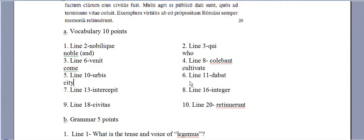Urbis is city. Dabot is give. Interkepet is intercept or cut off. Integer is whole or fresh. Kiwitas would be state. Reten and erunt is retain or hold back.